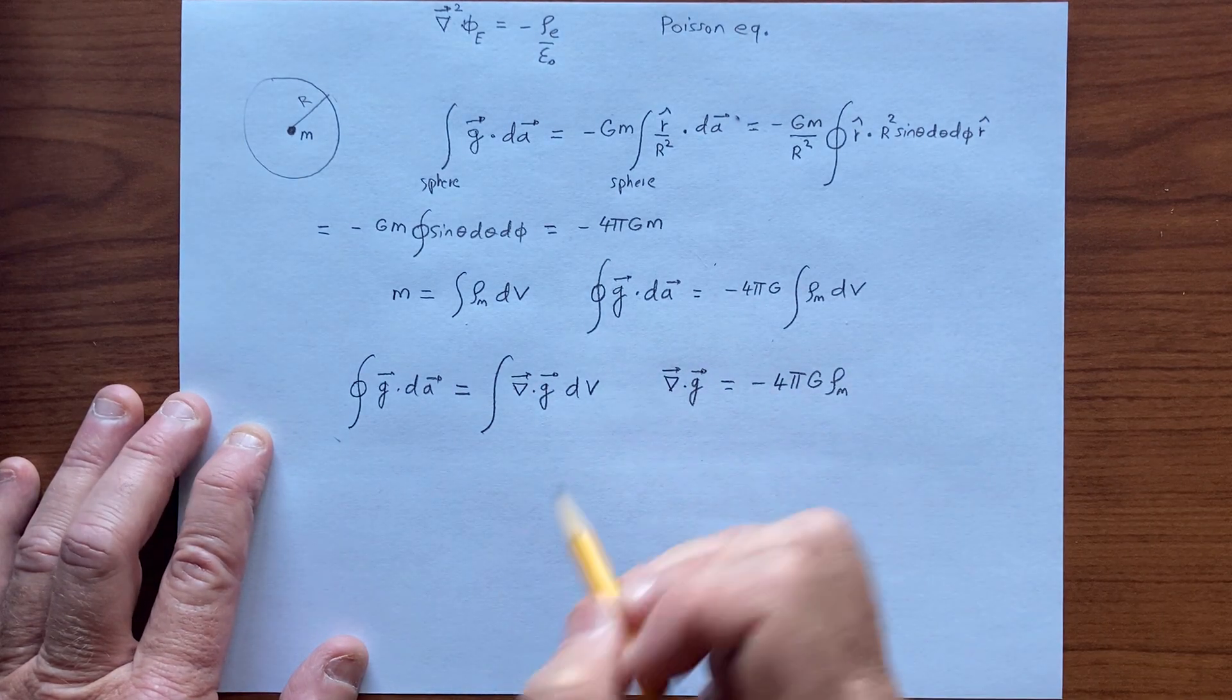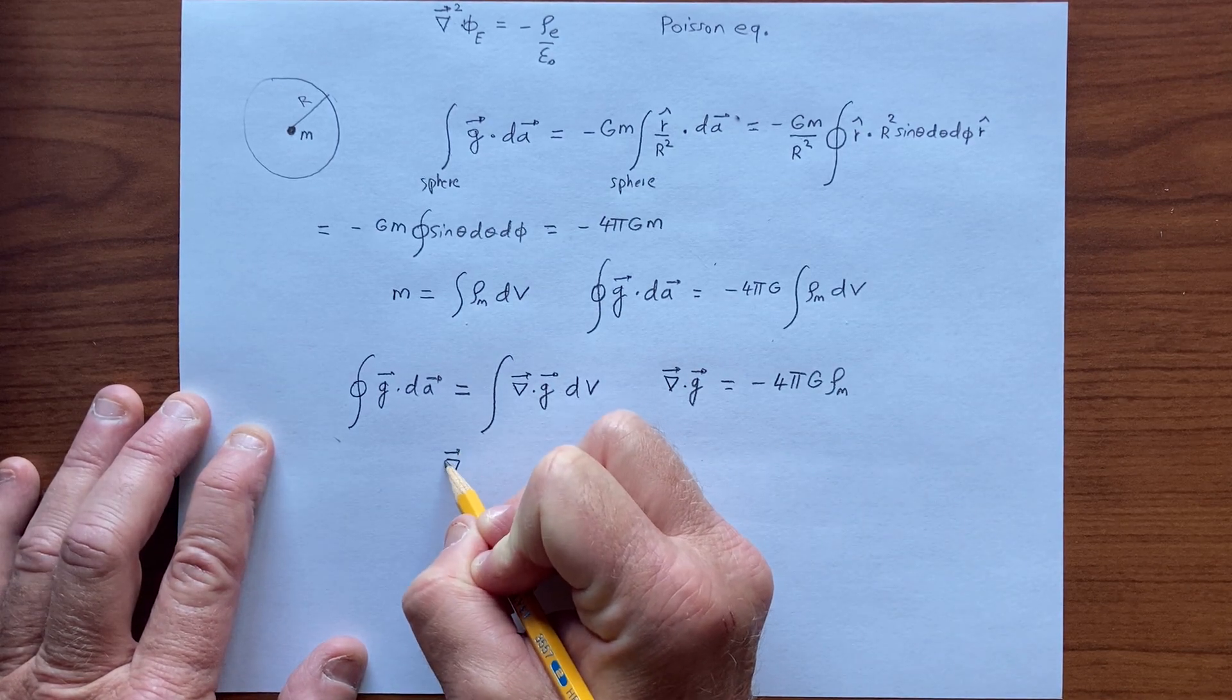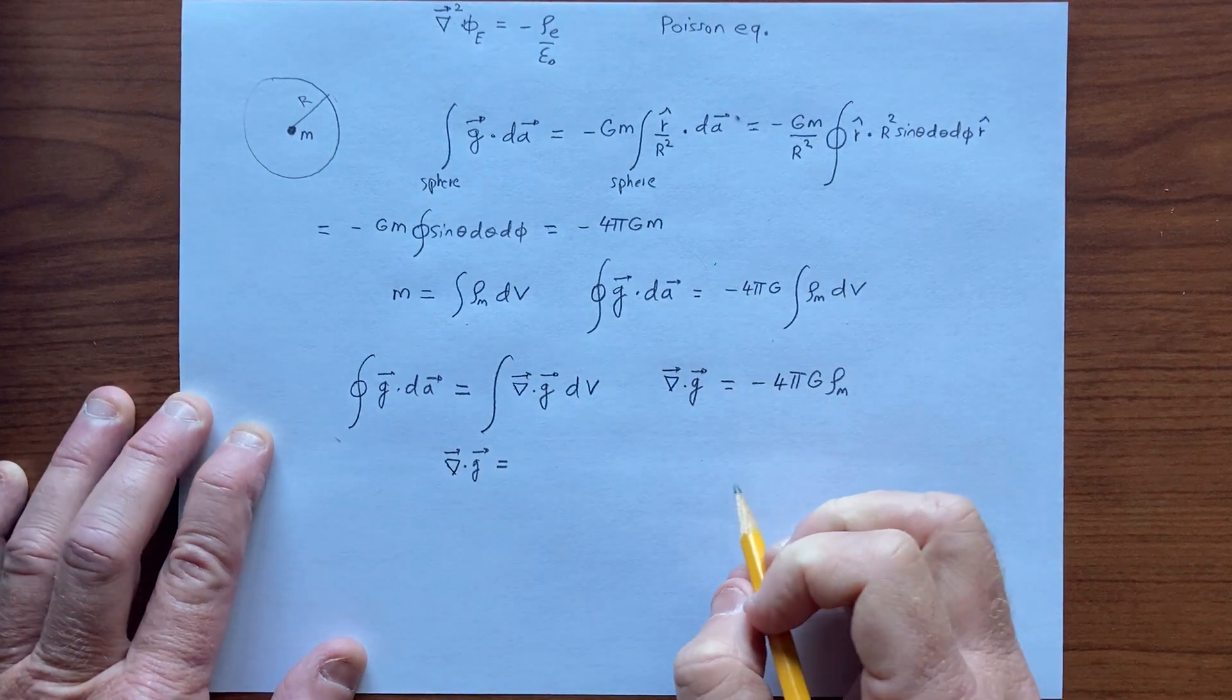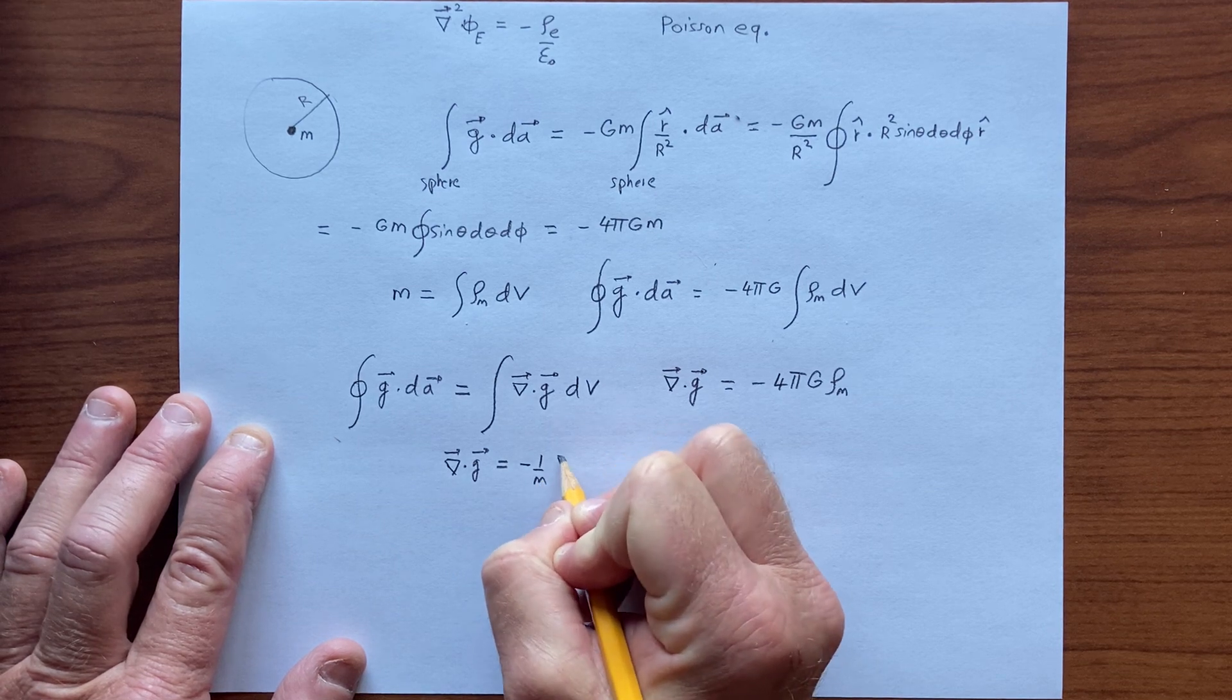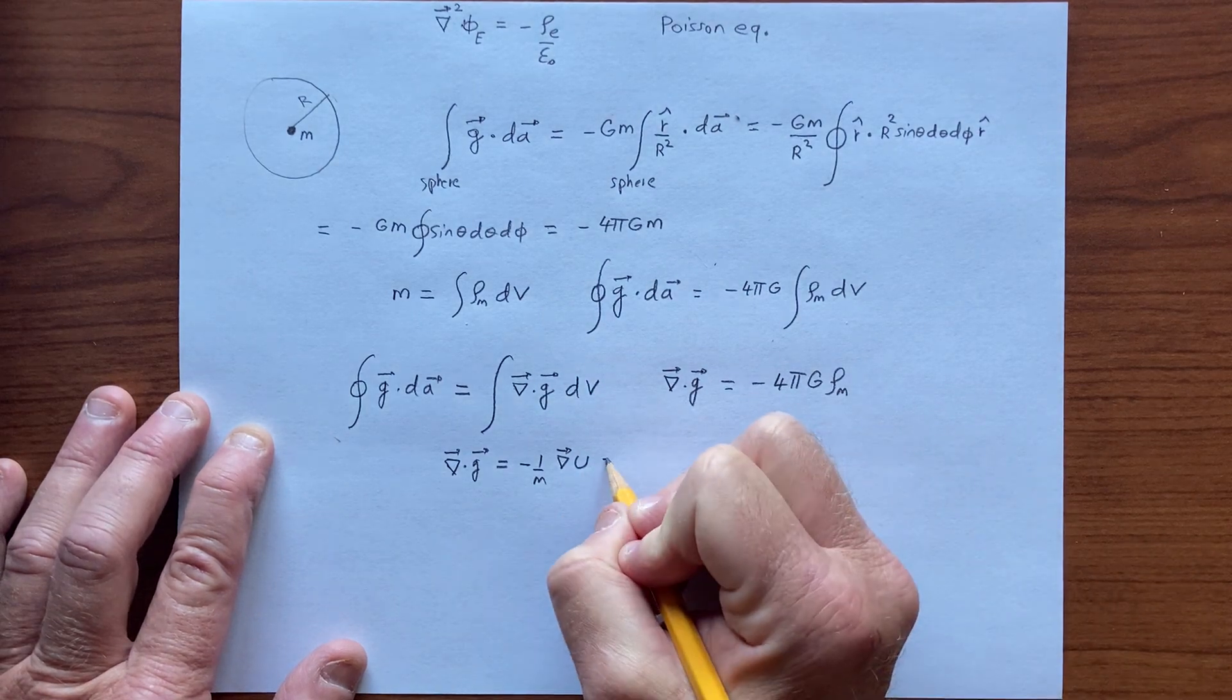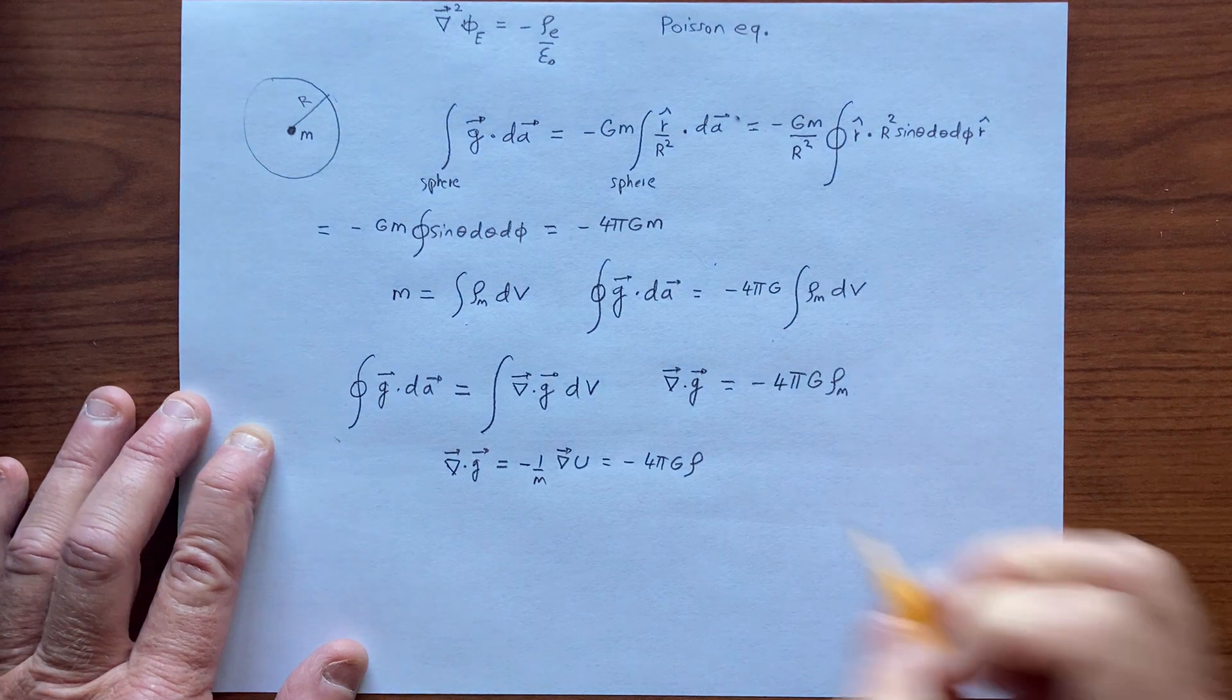And we want the Poisson equation, so we want another derivative, so the divergence of g in terms of the gravitational potential is we divide by the mass, and we take the gradient of the gravitational potential, and this is minus 4 pi g rho mass,